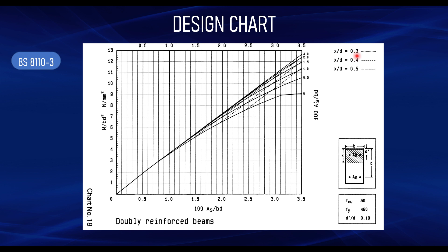According to the code we have only three options for x over d: 0.3 (30% redistribution), 0.4 (40% redistribution), and 0.5. For those conversant with structural analysis and design, you know most of the time we use 15% or 30% redistribution. For this video I'm going to stick with 30% redistribution. On the chart, the 30% distribution corresponds to dotted lines.